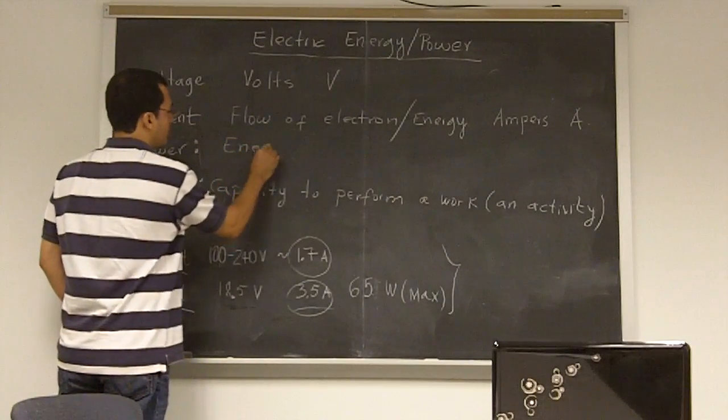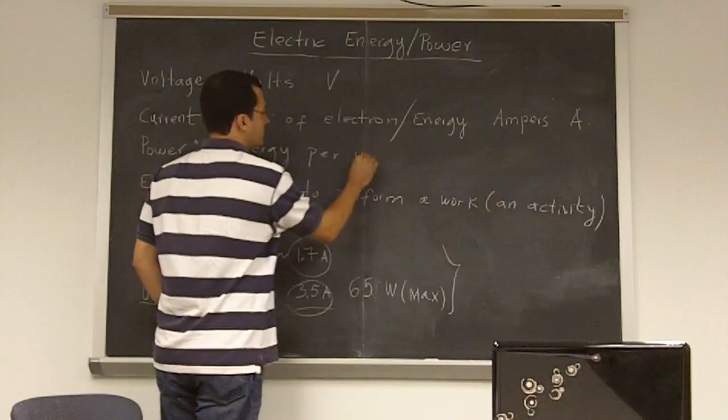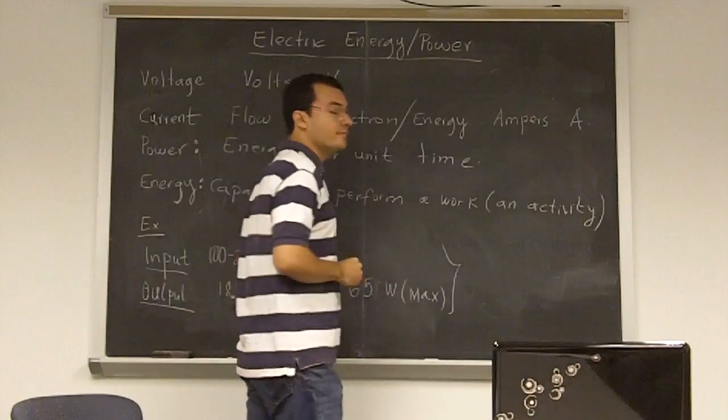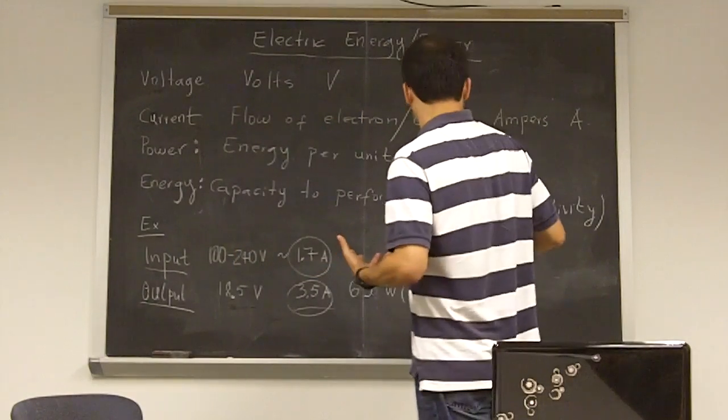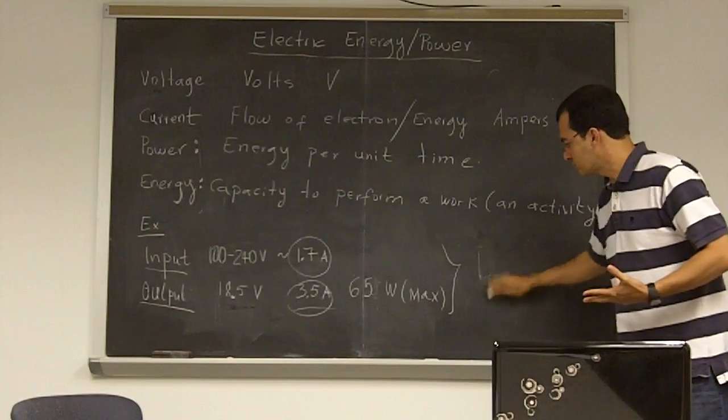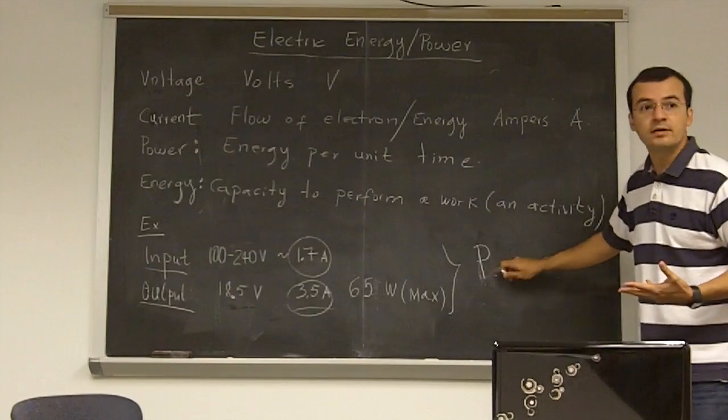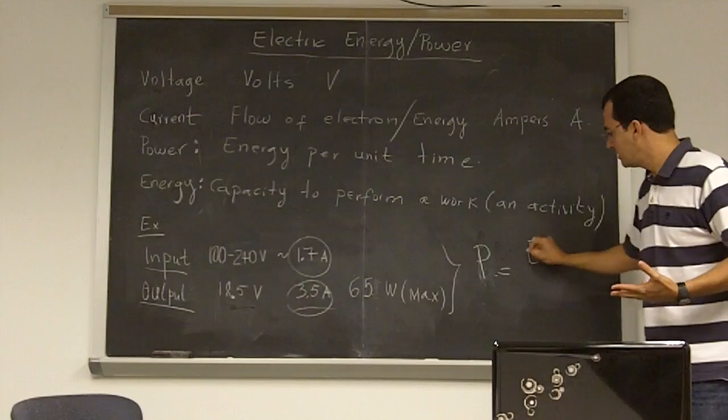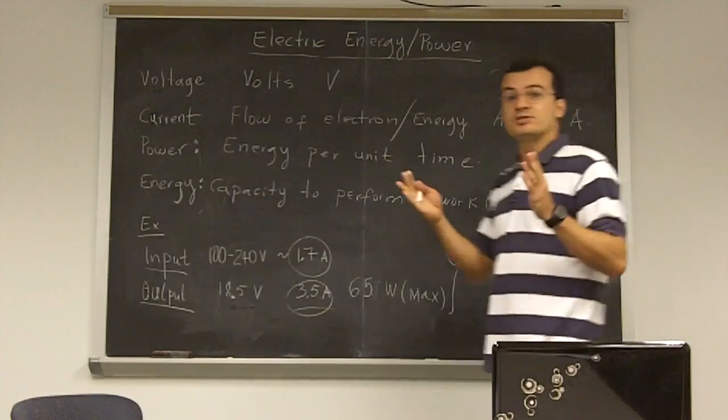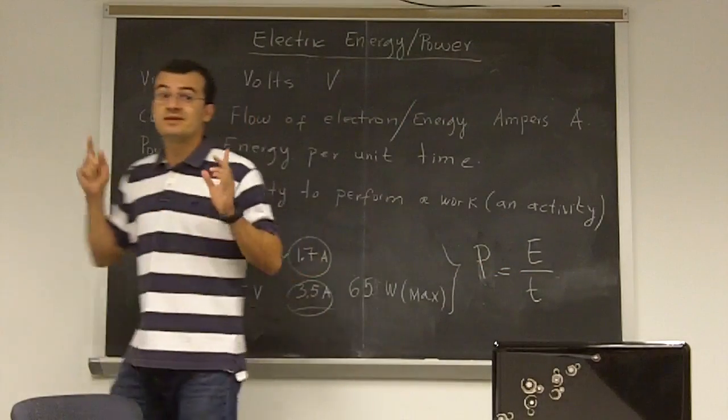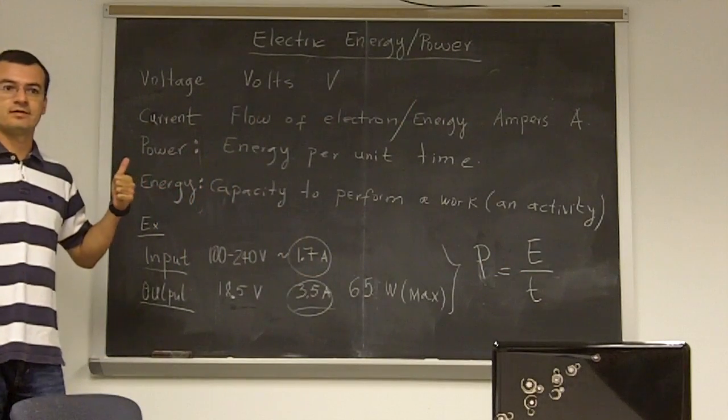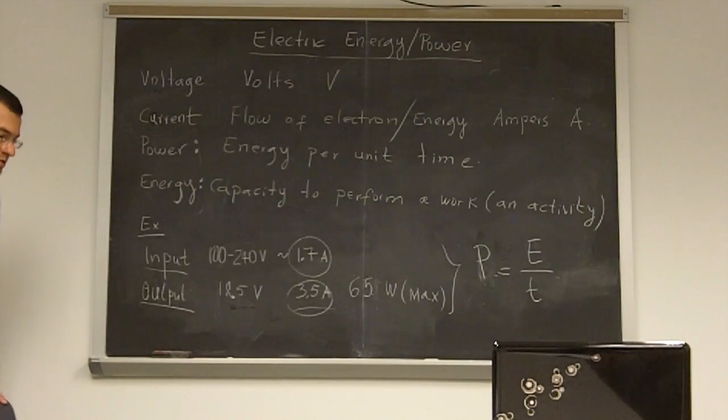So power is basically the energy per unit time. Okay. So it means, energy, excuse me, I'm going to use letters P for power, E is energy over time. If the time is shorter, what's going to happen if the energy is the same? Power. Power is higher.